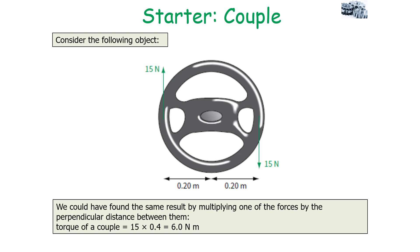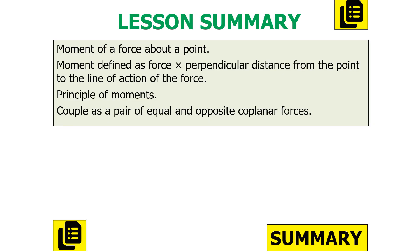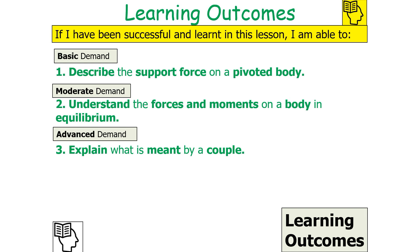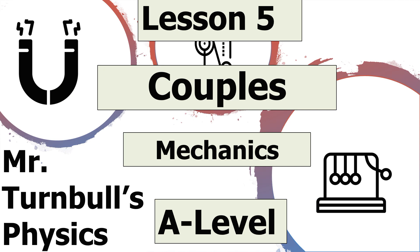To summarise today's lesson: we should know the moment of a force about a point, defined as force times perpendicular distance from the point to the line of action of the force. We should understand the principle of moments and understand a couple as a pair of equal and opposite co-planar forces which cause an overall turning effect on an object. We should be able to describe the support force on a pivoted body, understand forces and moments on a body in equilibrium, and explain what is meant by a couple. Thank you very much for watching this lesson on couples, part of the mechanics topic in AQA A-level physics.